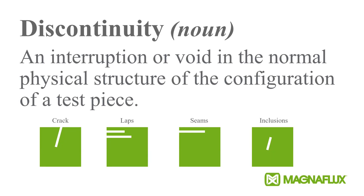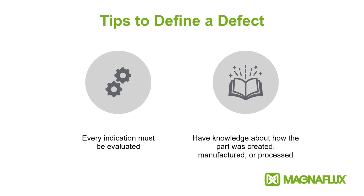Every indication must be evaluated. If you see something on the surface, do not call it a defect right away. You can have something as simple as a watermark that looks like a defect. Do a solvent wipe on it — if it doesn't come back, it is not a defect. You also have to have knowledge of how the part was created.